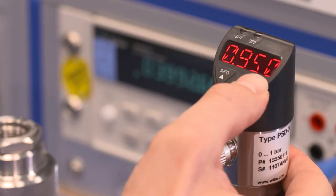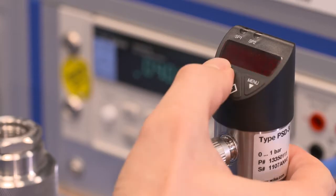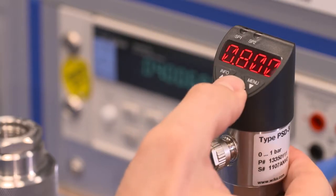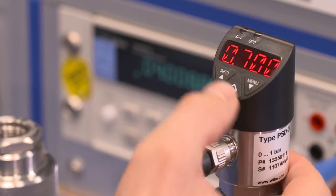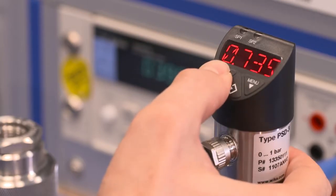In order to set, for example, switch point 1, use the up and down buttons and then confirm the value with enter. To set the reset point, go to RP1 in the menu. Confirm with enter.